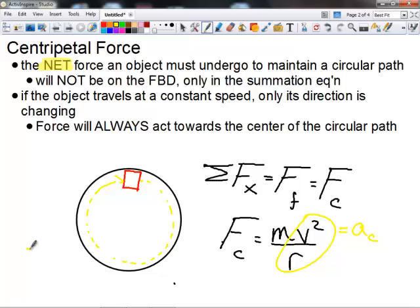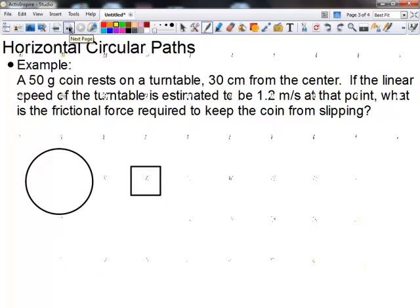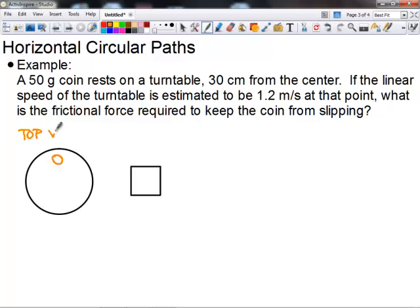The best way to look at these problems is just to look at a couple examples. The first one is we have a horizontal circle. So the object is going to be traveling in a horizontal circle. So our view of our circle over here is going to be a top view. We have a 50 gram coin resting on a turntable 30 centimeters from the center of the turntable. If the linear speed of the turntable is estimated to be 1.2 meters per second at that point, what's the frictional force required to keep the coin from slipping?